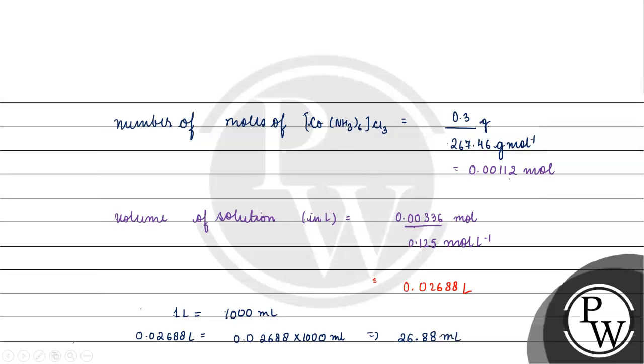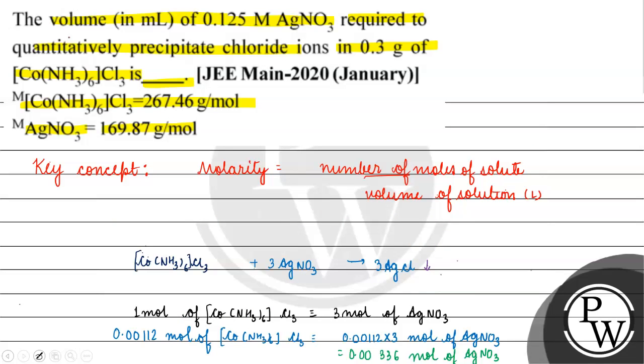This is the volume of AgNO3 that will be required to quantitatively precipitate chloride ions in 0.3 gram of [Co(NH3)6]Cl3, and the final answer for this question is 26.88 milliliters. I hope you understood it well. Thank you and all the best.